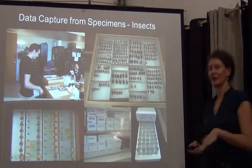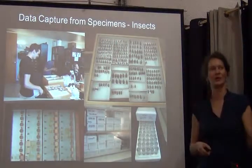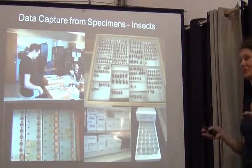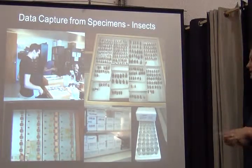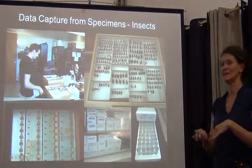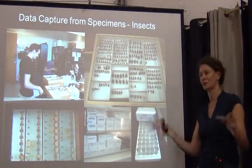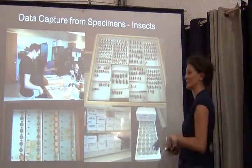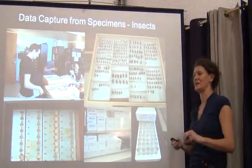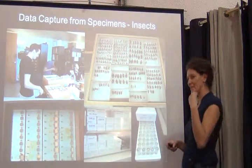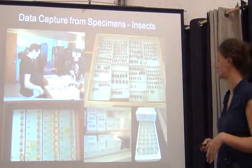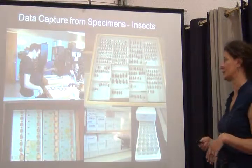After talking about workflows in herbarium and vertebrate collections, we're now back to insect specimens. Just to remind you, the core challenges there are: small, fragile, and many. I think this really is the core of the things we have to consider.